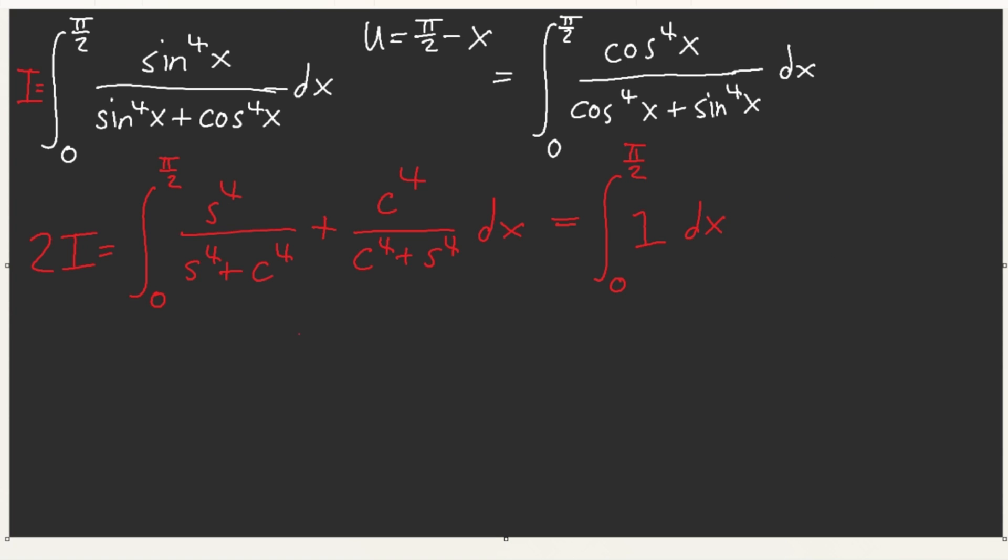And so, what we have is 2i equals π/2. Thus, this whole integral is equal to π/4. And that is the Queen's Rule.